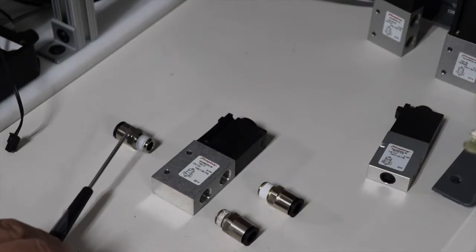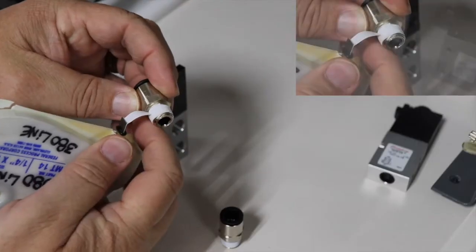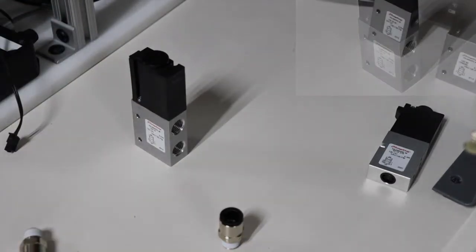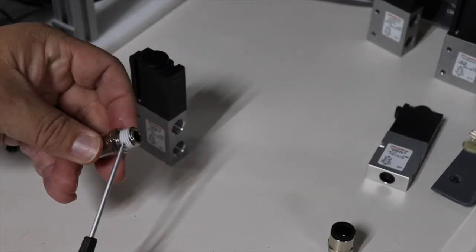Be sure to use thread sealant. The most common sealant options are fittings with sealant pre-applied, Teflon tape, or thread paste. When using thread sealant, be sure to start at the second or third thread to make sure no tape will contaminate your flow path.